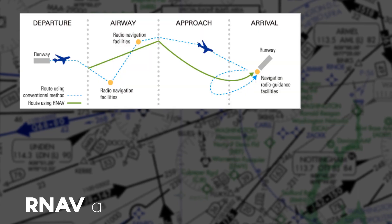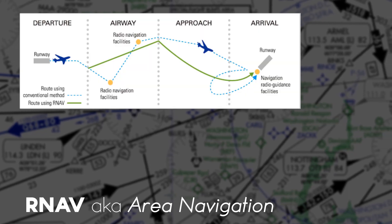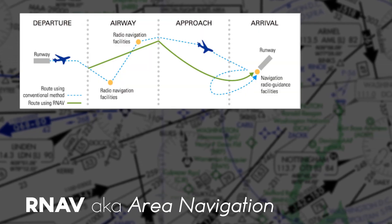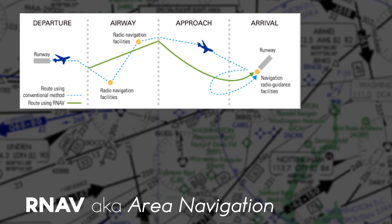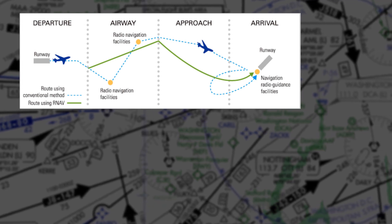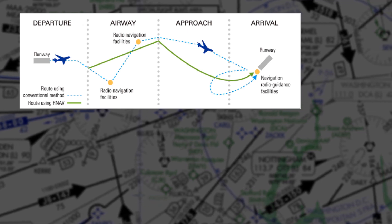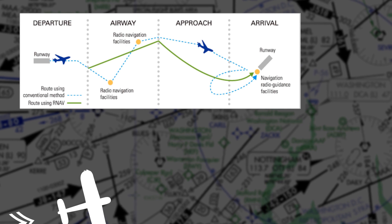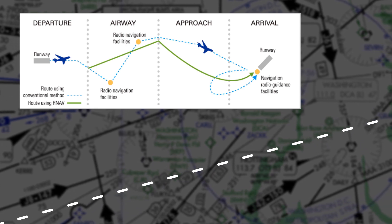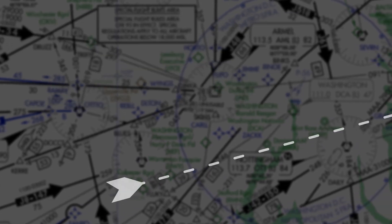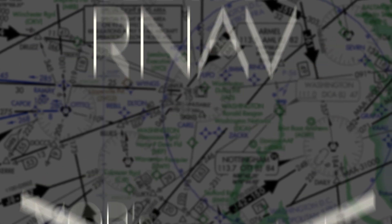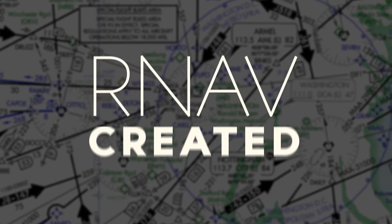RNAV, also known as Area Navigation, was created as a result of cost-saving measures by airlines. A simple reference back to our geometry lessons tells us that the shortest distance between any two points is a direct line.